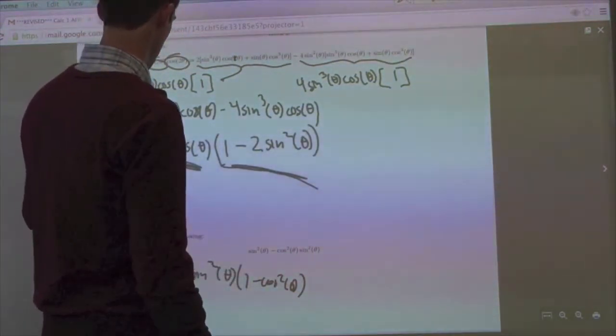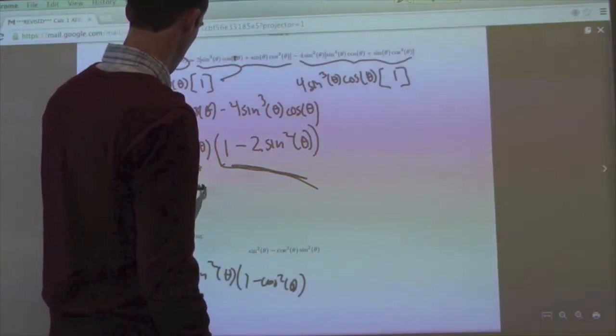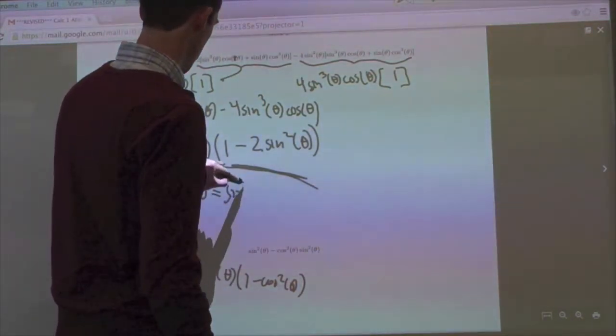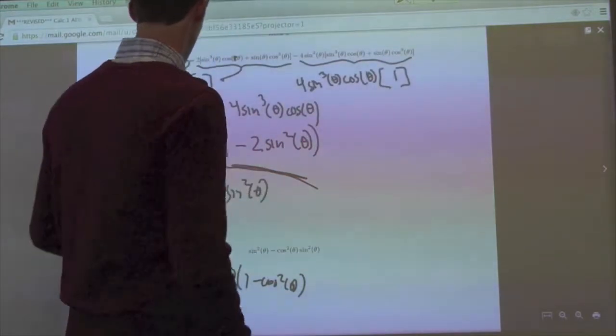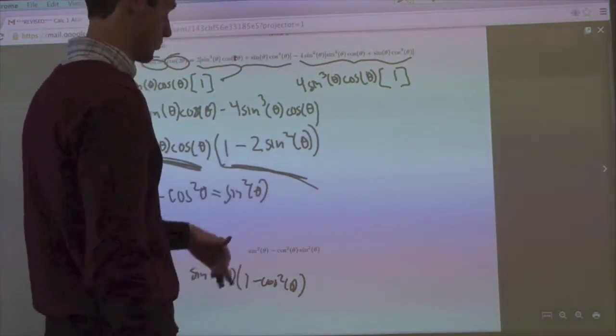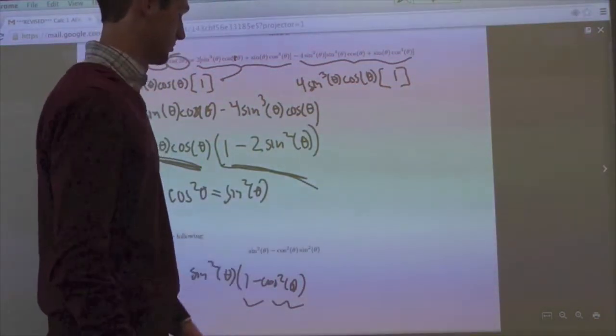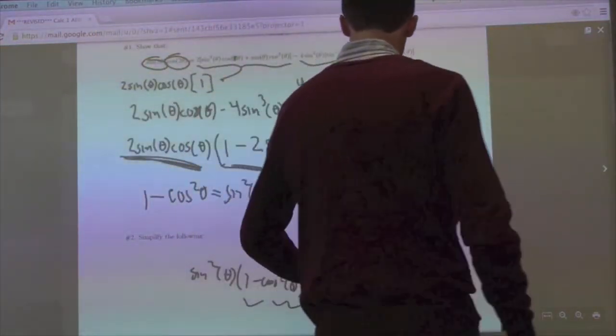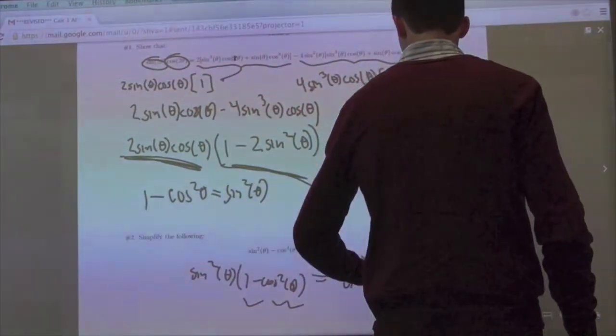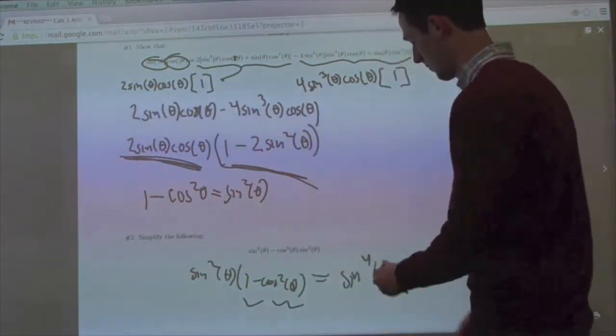Because if you went ahead and set up one minus cosine squared is equal to sine squared, and then you added the cosine across, you get sine squared plus cosine squared is one, which is true. So this becomes sine squared, then you get sine squared times sine squared, which is sine to the fourth. And that's it.